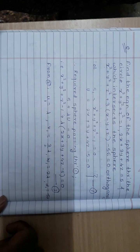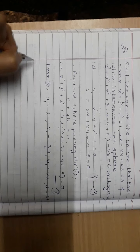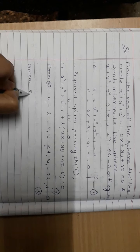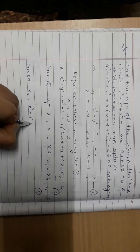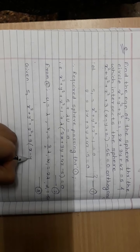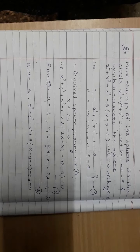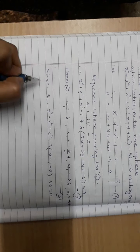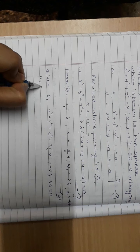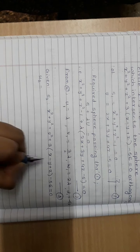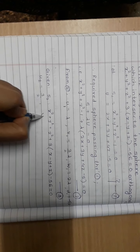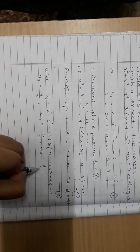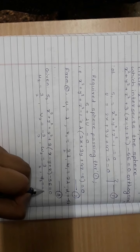Now using the given equation of the second sphere — which is x² + y² + z² + 3x - y + z - 56 = 0, call this equation number 3 — let's figure out u2, v2, w2, and d2. u2 = 3/2, v2 = coefficient of y divided by 2 = -1/2, w2 = coefficient of z divided by 2 = 1/2, and d2 = -56.